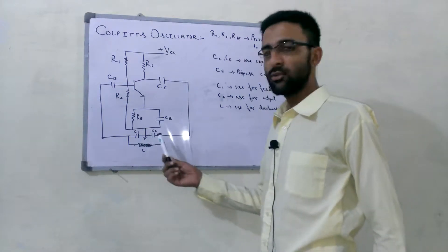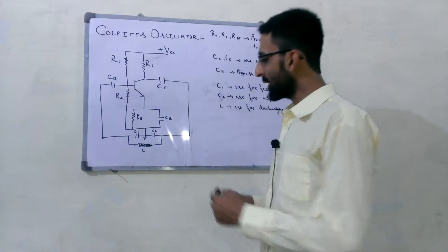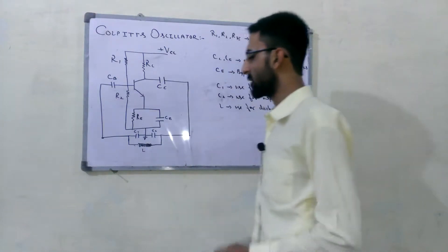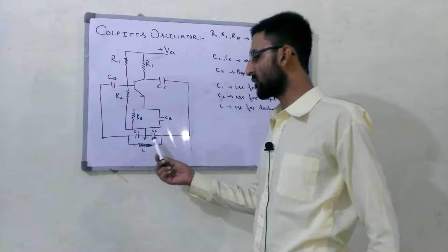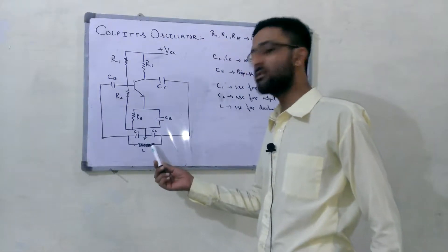When C1 and C2 are charged, then the oscillations are started in this circuit due to the discharging of C1 and C2 due to this inductor L.